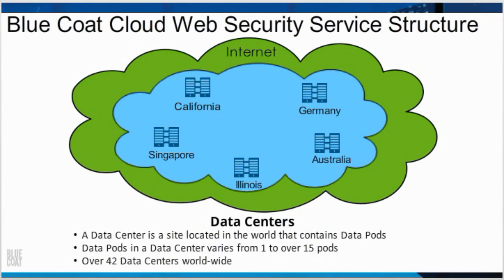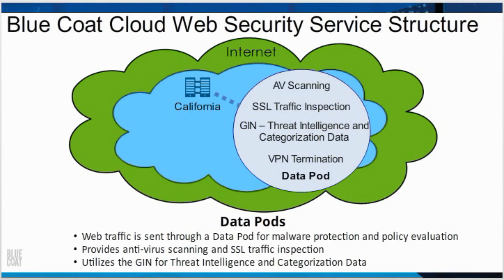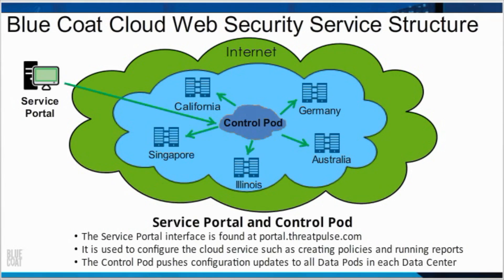The Bluecoat Cloud Web Security Service structure: Data centers. A data center is a site located in the world that contains data pods. The number of data pods in a data center varies from 1 to over 15 pods. There are over 42 data centers worldwide. Data pods: web traffic is sent through a data pod for malware protection and policy evaluation. It provides antivirus scanning and SSL traffic inspection, and utilizes the Global Intelligence Network for threat intelligence and categorization data.